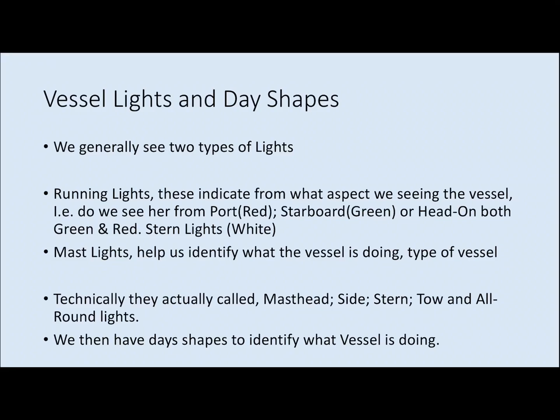In very general terms, we have two types of lights. Lights that identify the type of boat or what it's doing, they're normally an all-round white, red or green, and they will be put on a mast of some sort. Power vessels, smaller ones will have one mast, larger vessels will have two masts, and sailing vessels obviously got the mast. We talk about running lights being port red, starboard green. Head on, we see it green and red, or maybe a stern light green and white. Mast lights, technically they're actually called masthead lights. We also refer to lights as side lights, stern lights, tow lights, and all-round lights.